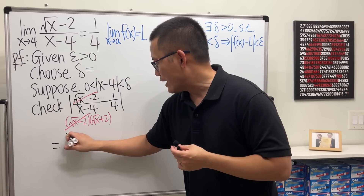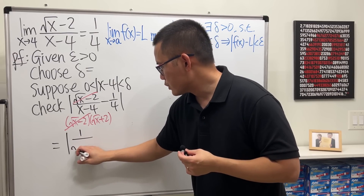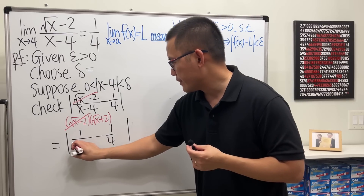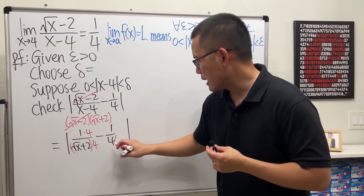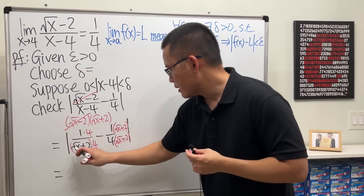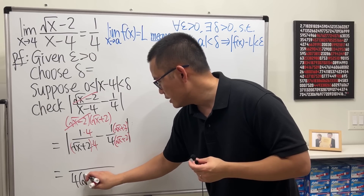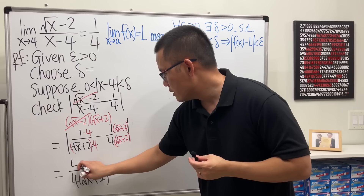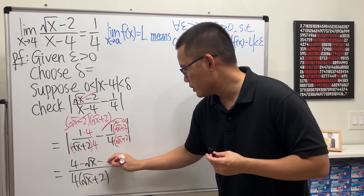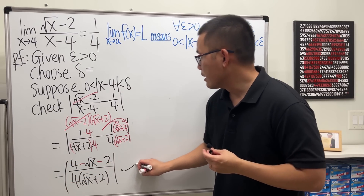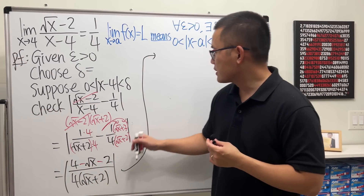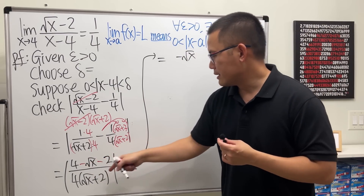After simplification, we have the absolute value of 1/(√x + 2) minus 1/4. We combine the fractions: multiply the first term's top and bottom by 4, and the second term's top and bottom by (√x + 2). The denominator becomes 4(√x + 2). Distributing the minus sign in the numerator gives us 4 minus (√x + 2), which simplifies to the absolute value of (−√x + 2) all over 4(√x + 2).